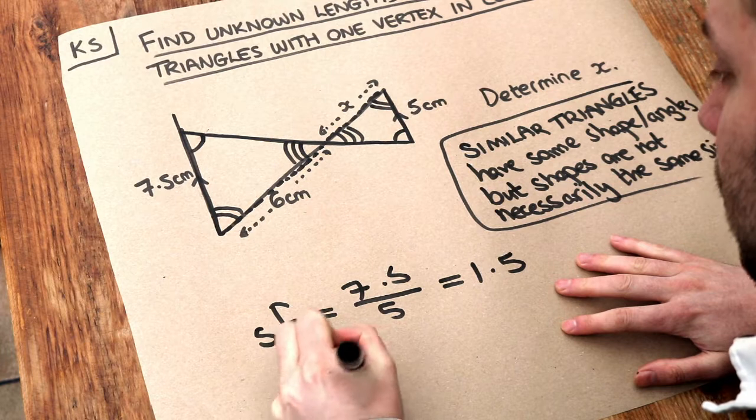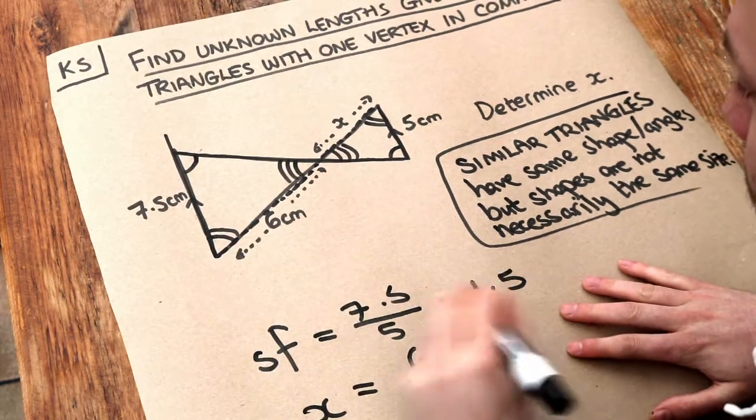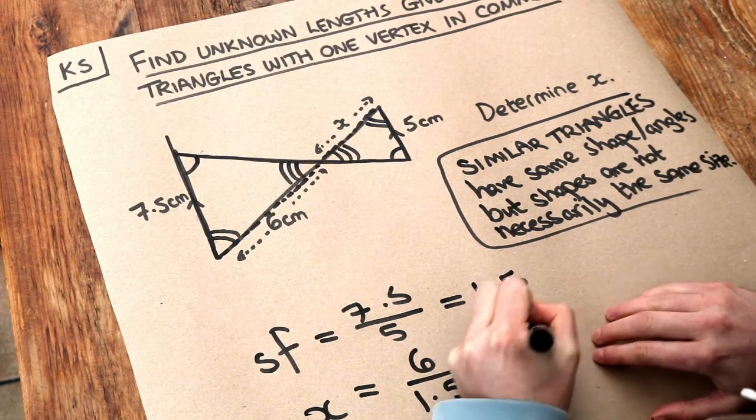So to get x all we need to do is just do the 6 divided by that scale factor and that gives us a length of 4.